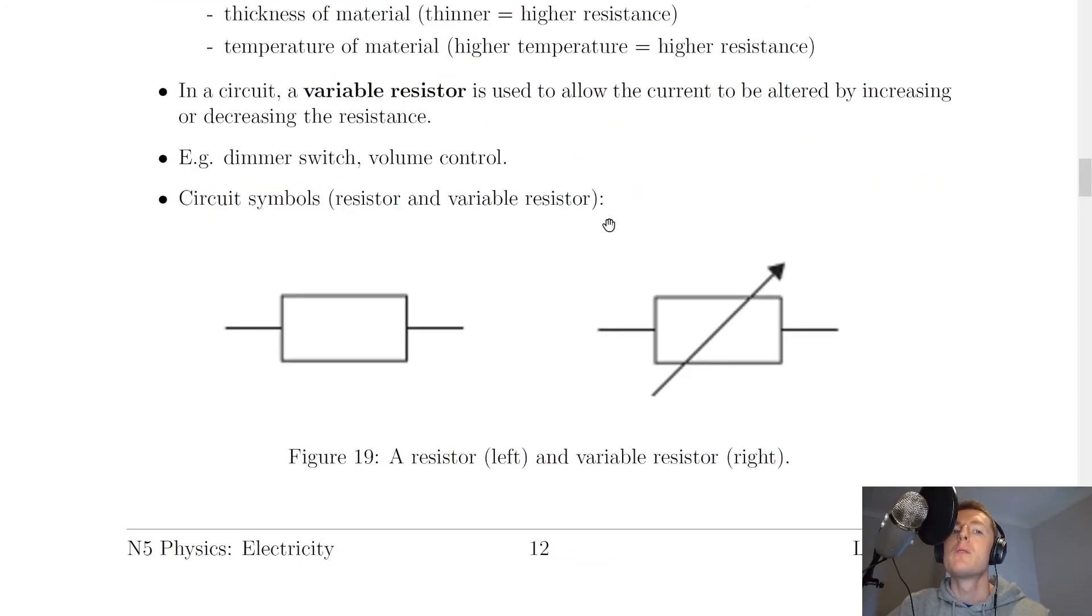Moving on, it says that in a circuit a variable resistor is used to allow the current to be altered by increasing or decreasing the resistance. This word 'variable' just means to change, so we can change resistance if we have a variable resistor, and if we change resistance in a circuit then we change the current as well.